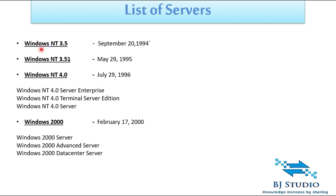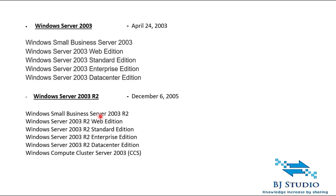If you notice the naming convention, they have not mentioned 'Server' in the Windows 2000 names — just 'Windows.' After this, they started coining it as 'Server' again. The fifth edition is Windows Server 2003, released in April 2003.